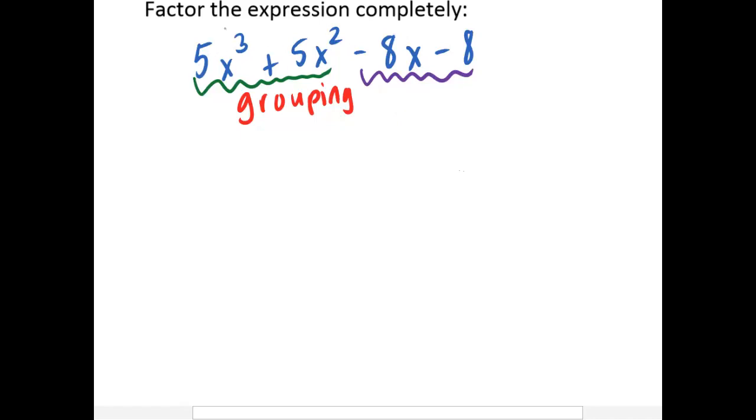Can I factor anything out of these two terms underlined in green? Yes, I can factor out a five and I can factor out an x squared. So then I have x plus one left. What can I factor out of these terms underlined in purple? I can factor out a negative eight.